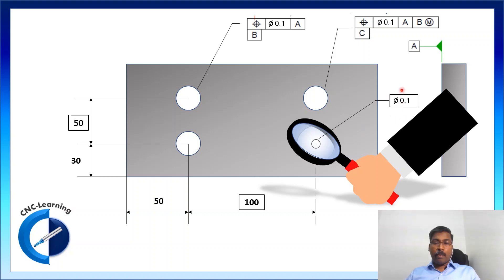Now, diameter 0.1 for the position, what does that indicate? So, this exact center is the true center.